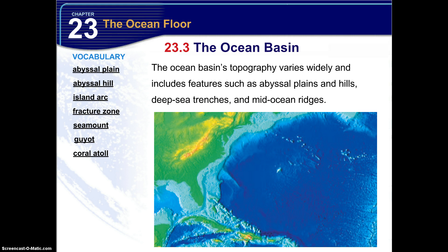Now the ocean basin's topography varies widely and includes features such as the abyssal plains and hills, deep sea trenches, and mid-ocean ridges. Looking at this diagram, can you find a trench? Can you find a mid-ocean ridge? Can you locate continental shelf, continental slope, continental rise, abyssal plains, and hills? Why don't you try that out right now? Just point to it or try to find each one of those on this map.